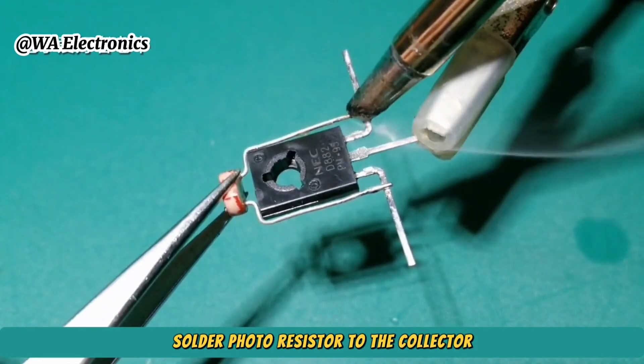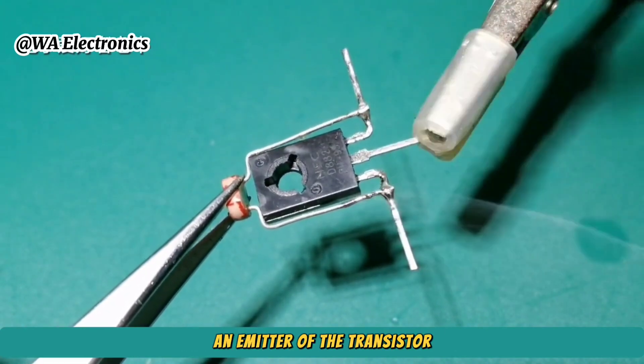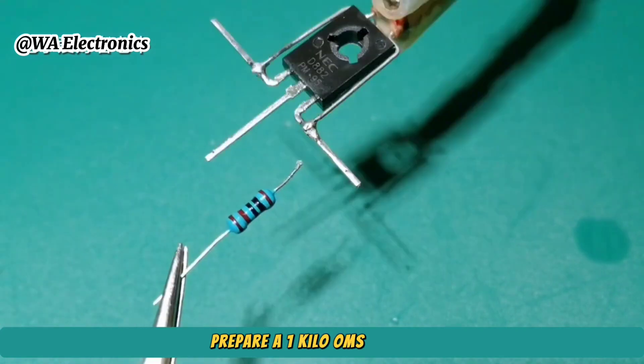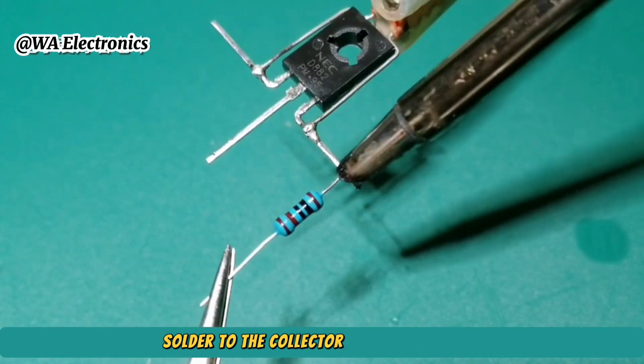Solder the photoresistor to the collector and emitter of the transistor. Prepare a one kilo ohm resistor and solder it to the collector of the transistor.